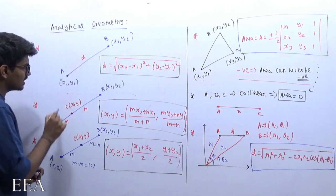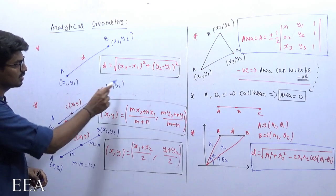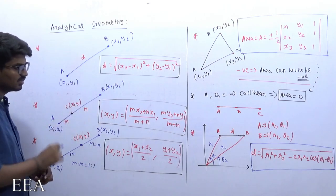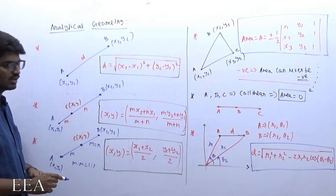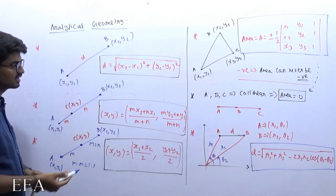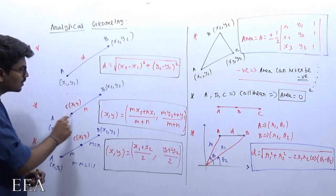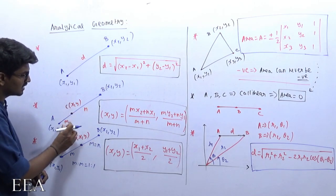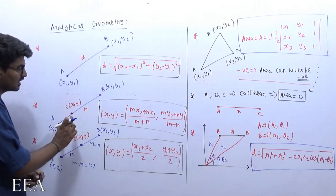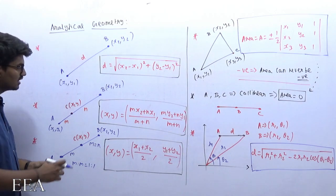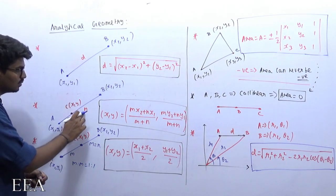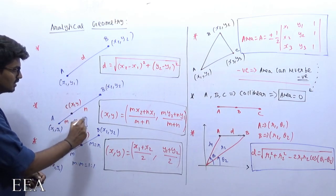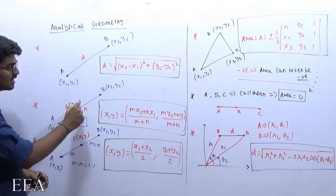Now, if a point A at (x1, y1) and B at (x2, y2) is there, and suppose I am plotting another point C in between A and B, and that point's coordinate is (x, y). If I want to find this coordinate, I need to know the ratio. For example, this is M and this is N — say 2 is to 3. I am dividing the straight line in the ratio of 2 to 3, where M is 2 and N is 3. If I know this ratio, how do I determine x comma y?